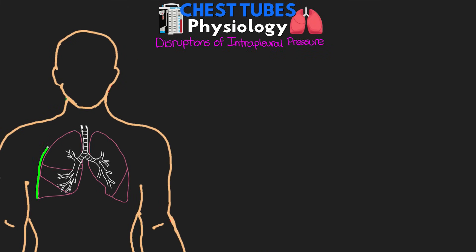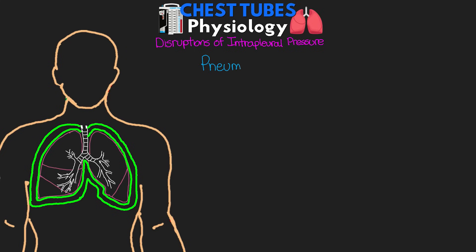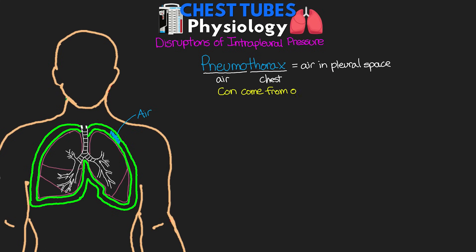Now let's talk about different disruptions of this intrapleural pressure. The first one is our pneumothorax. Pneumo means air, thorax is the chest, and this is essentially air in the chest or in that pleural space. This air can either come from the outside — such as a hole in the chest wall — or it can come from the inside if there's some kind of defect in the lung tissue that allows air to get into that pleural space. This air leak can either be spontaneous or acquired, which I'll go over in more detail in a future lesson.